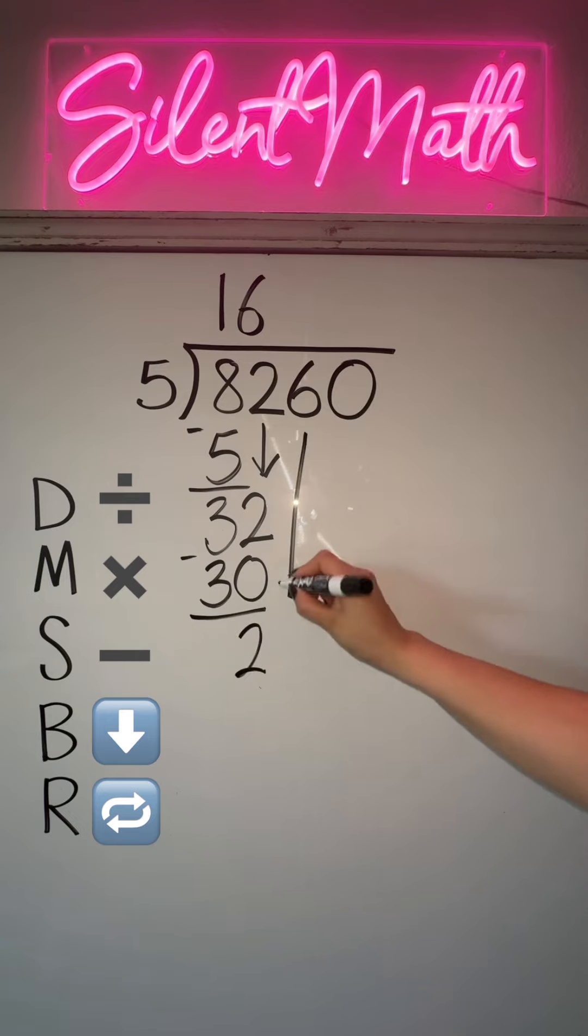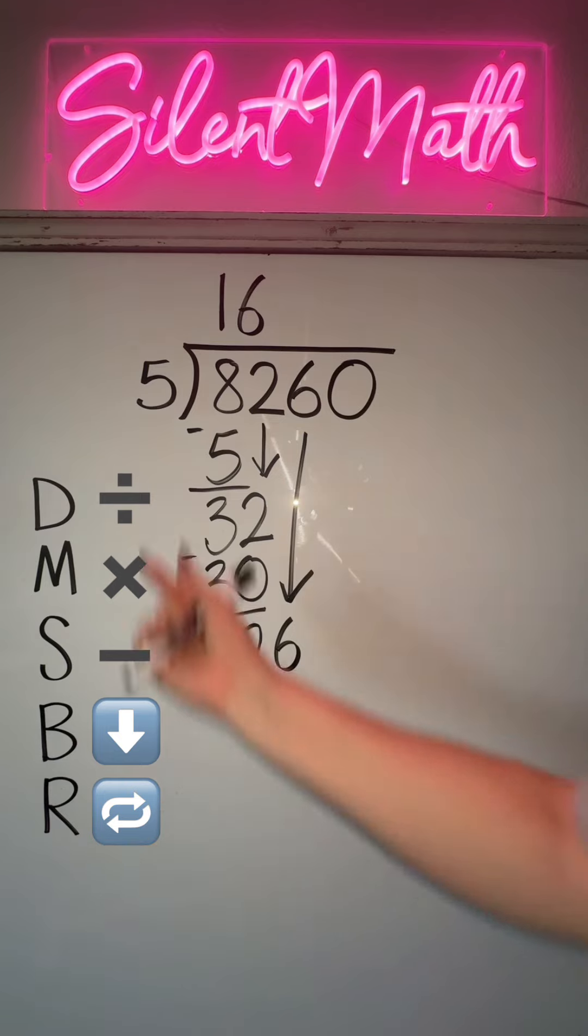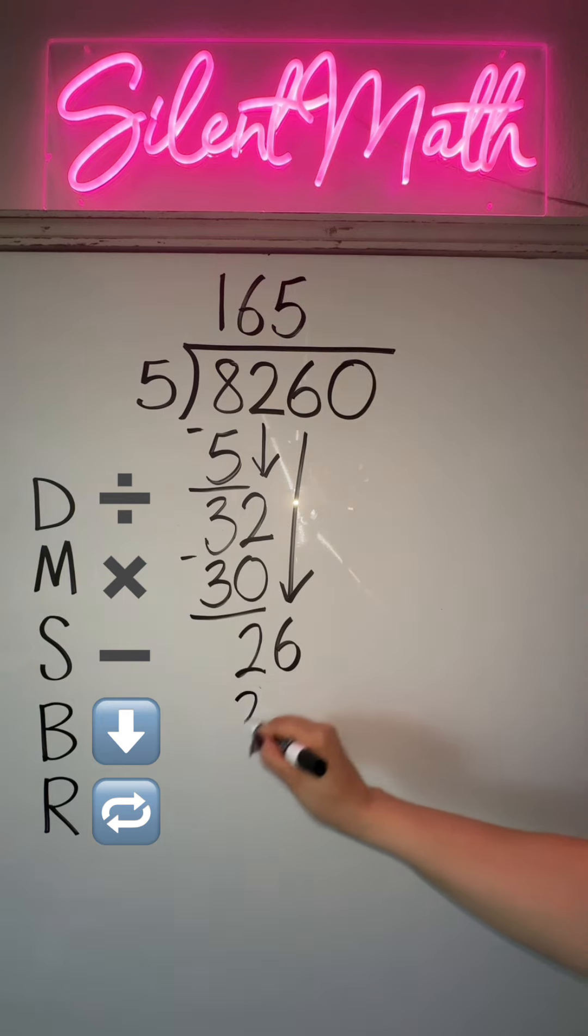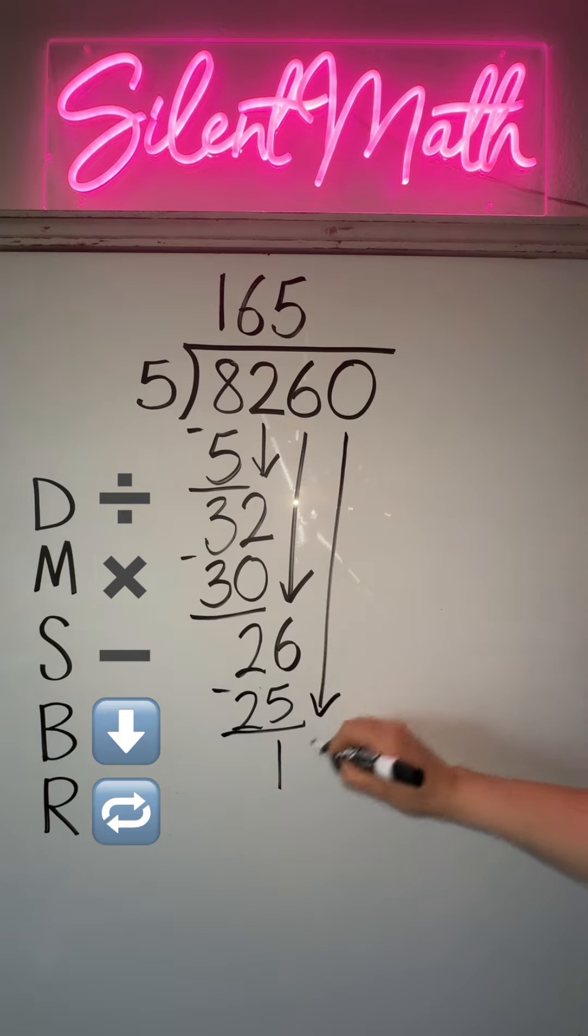Now we're going to bring down that next digit. Now we have 26. We're going to repeat the process. How many groups of 5 can go into 26? Well, at most 5 times - 5 groups of 5 is 25. That was multiplication. You're going to subtract: you have a difference of 1. Let's bring down that very last digit.